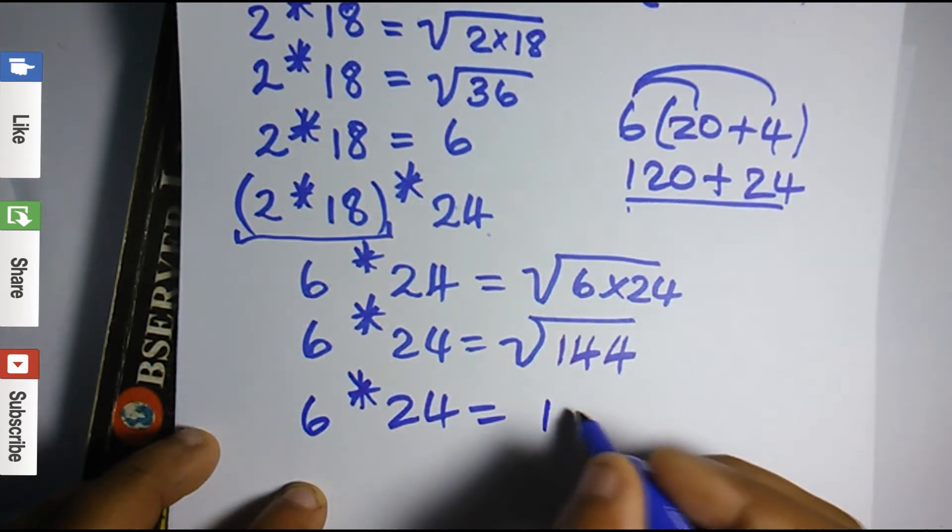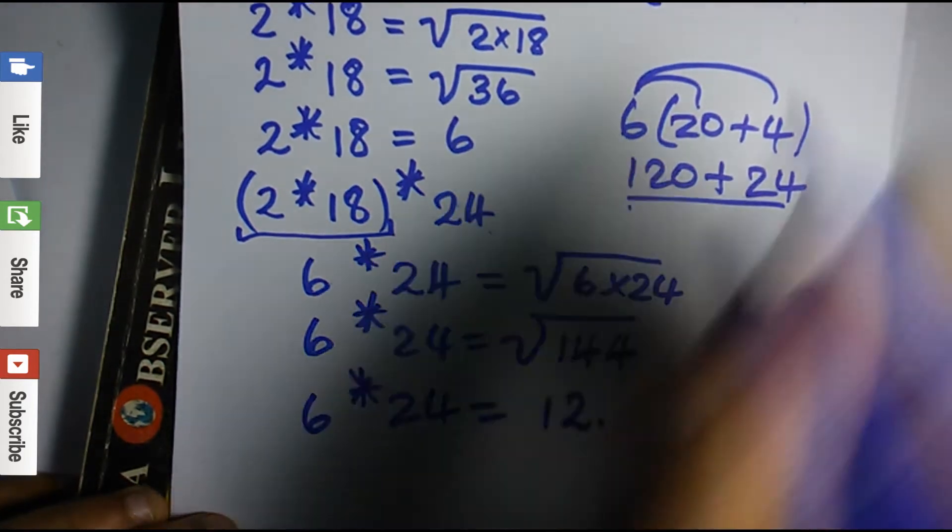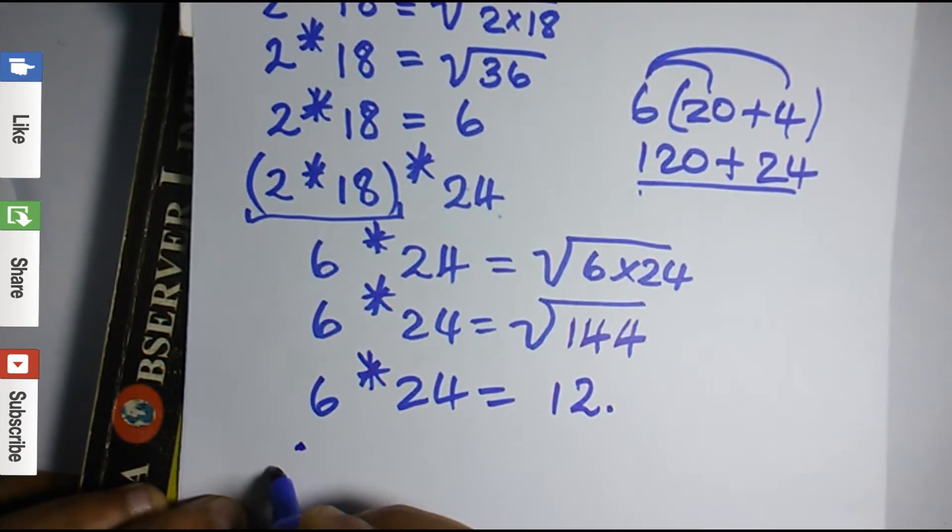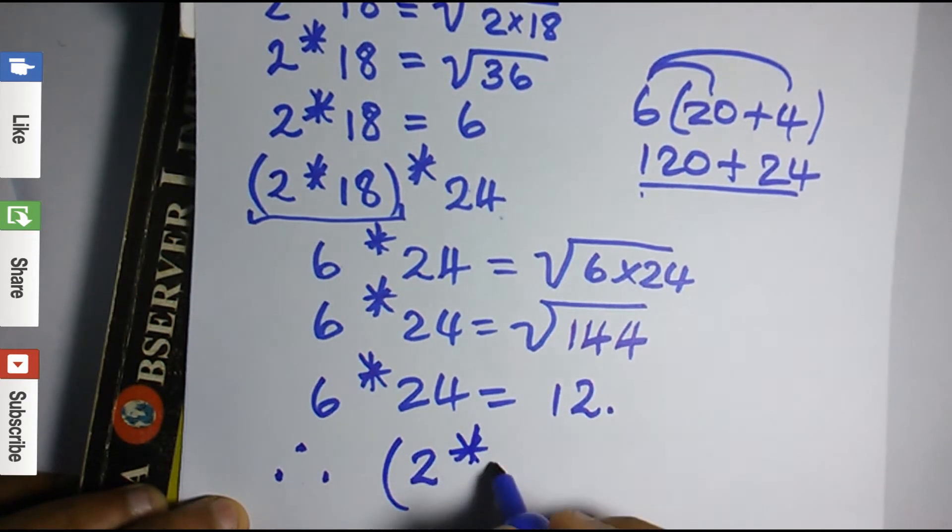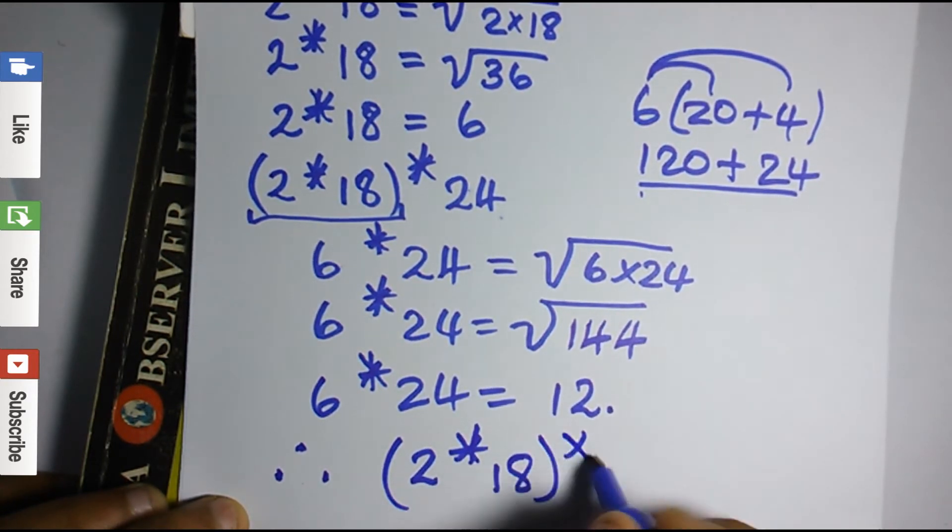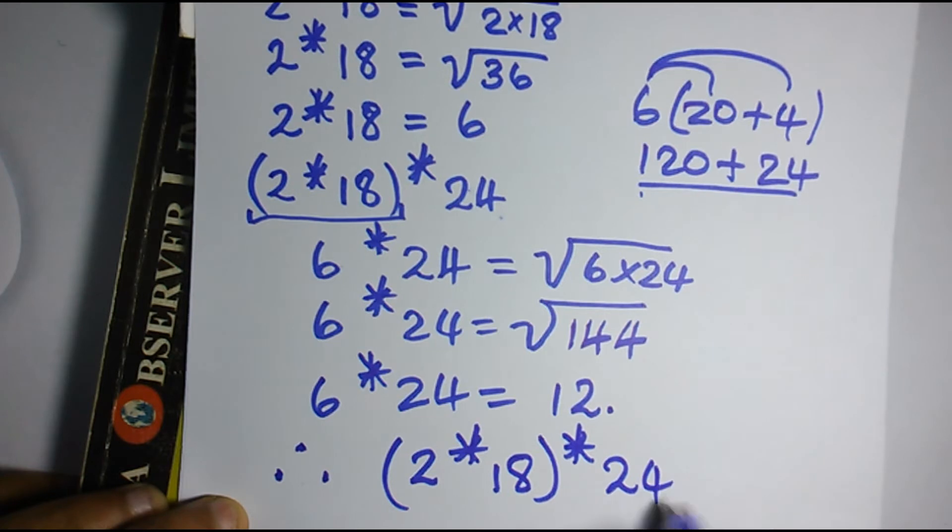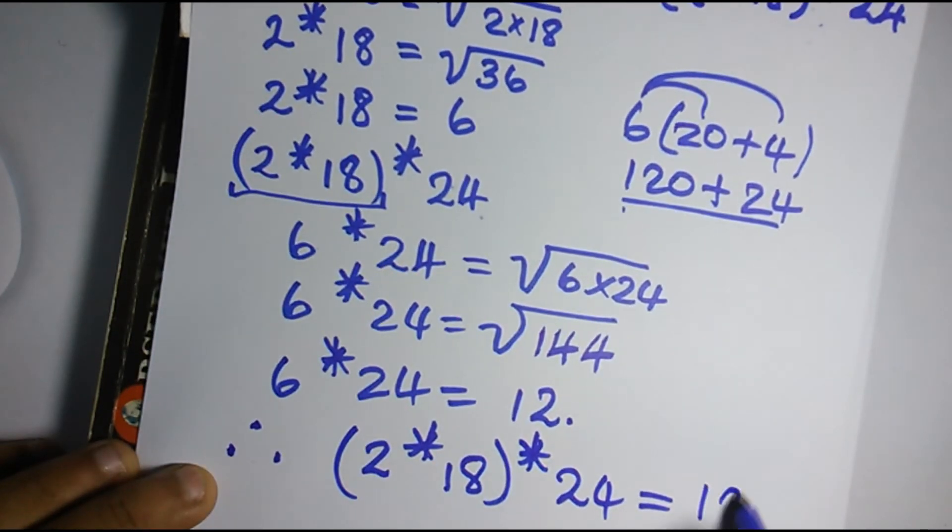So 6 asterisk 24 equals the square root of 144, which is 12. Therefore, 2 asterisk 18 asterisk 24 equals 12.